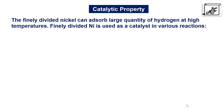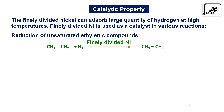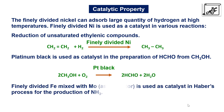Finely divided nickel can absorb large quantities of hydrogen at high temperatures and is used as a catalyst — for example in the reduction of unsaturated ethylenic compounds, such as the reaction of ethylene with hydrogen to give ethane. Platinum black is used as a catalyst in the preparation of formaldehyde from methyl alcohol. A mixture of finely divided iron and molybdenum is used as a catalyst in Haber's process for the production of ammonia.